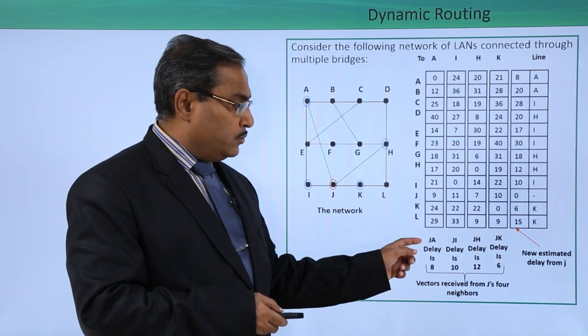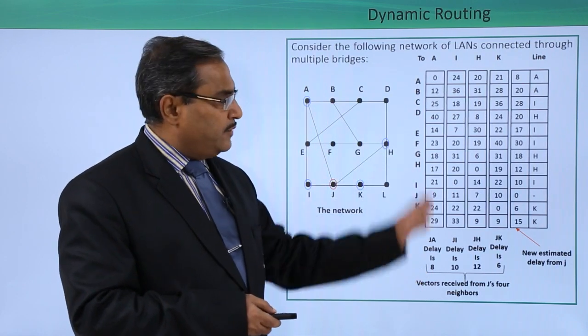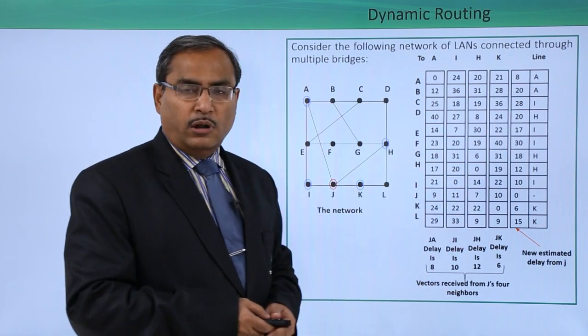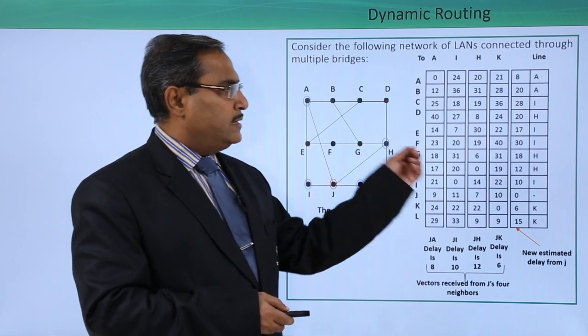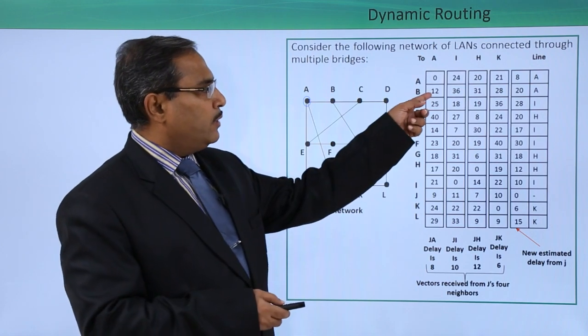Because J knows what A knows - what delays are required to reach respective bridges - and J knows what delay is required to reach A. So if you go on adding them and do the same for all three bridges, the minimum one will be taken and respective bridge number will be written.